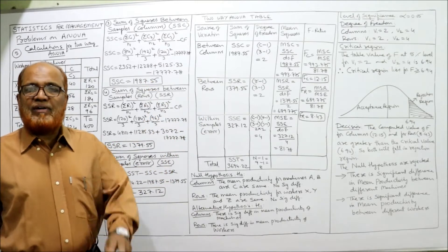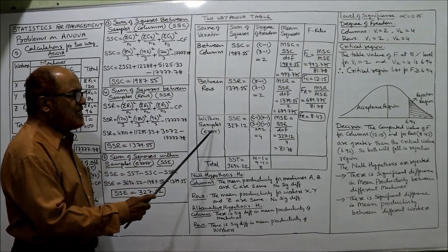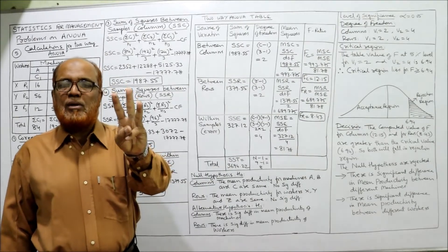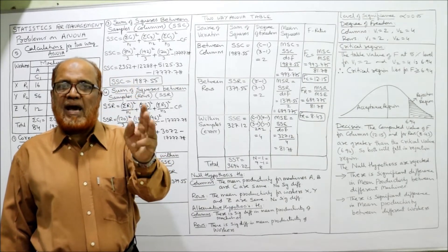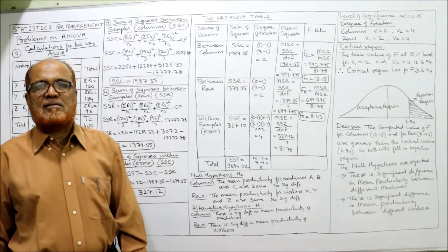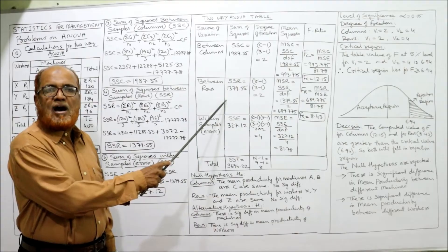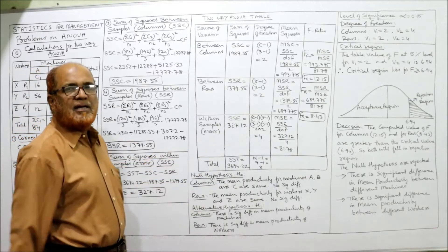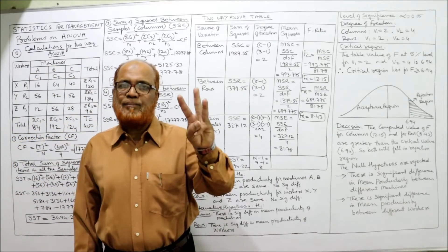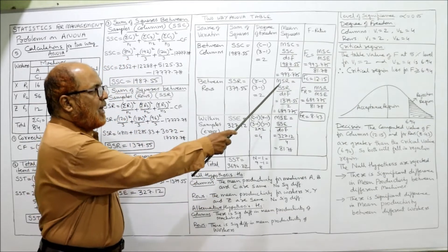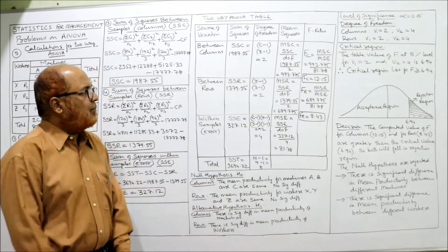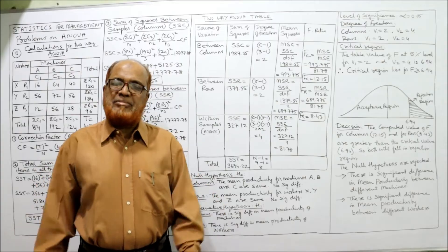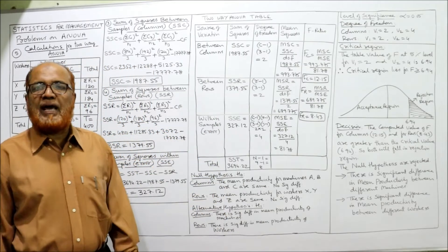The new row for two-way ANOVA is between rows (workers). In one-way classification there are only two rows; in two-way we have three: between columns, between rows, and within samples. Between rows: SSR = 1,379.55, df = R − 1 = 3 − 1 = 2, MSR = 1,379.55 / 2 = 689.775.